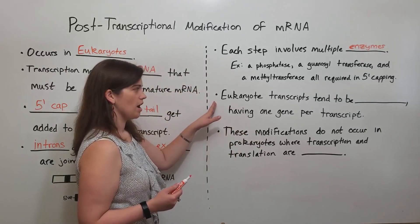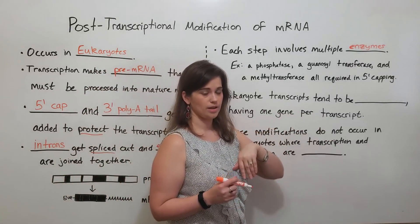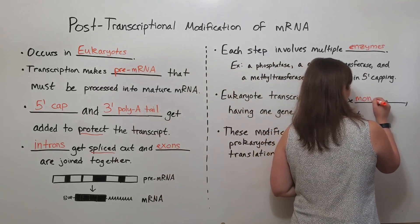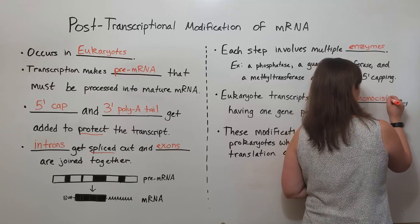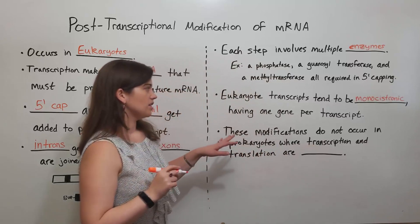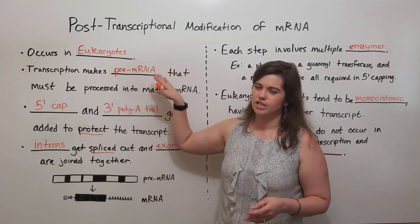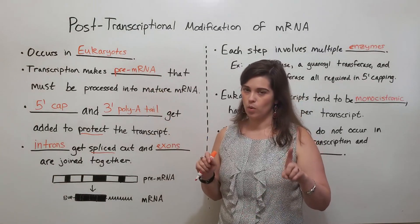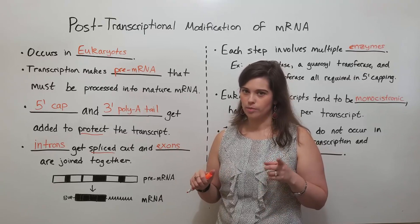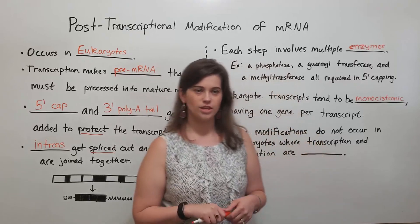Eukaryotic transcripts also tend to only have one gene per transcript. This is called monocystronic. Each pre-mRNA that's made generally only contains the information for one gene that will code for one protein, except in cases of alternative splicing, which I also have a video on.